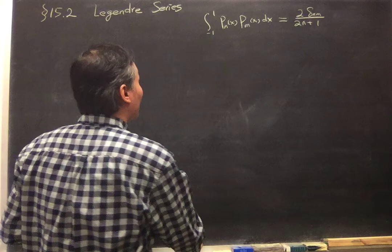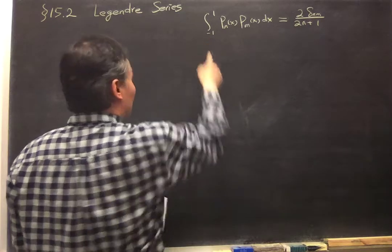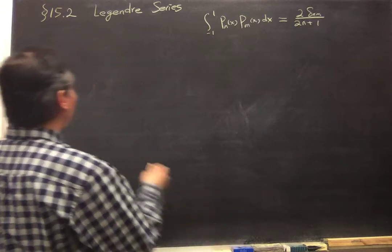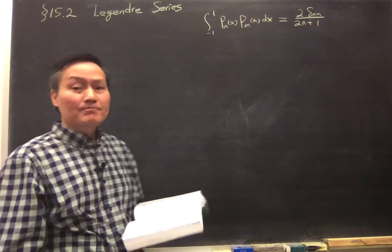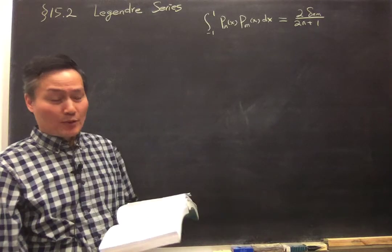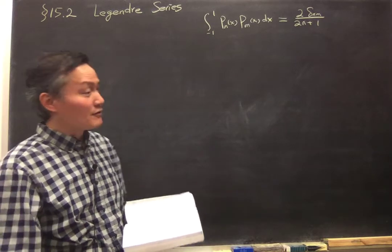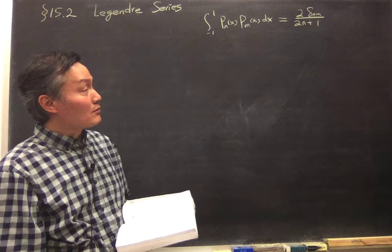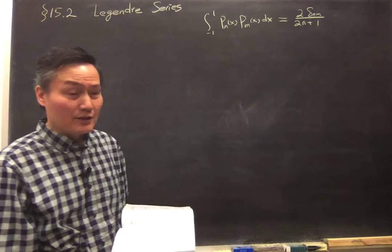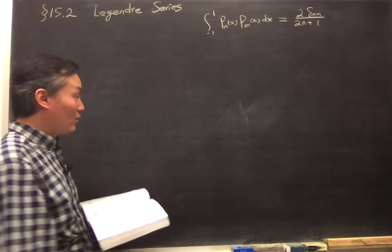So now, because of this relation, we can express a function defined within the domain of the Legendre polynomials for x from minus 1 to 1 as the linear combinations of the Legendre polynomials of all orders.